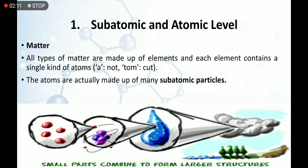Matter is made up of elements. Each element contains a single kind of atom. For example, if we look at water, water is made up of hydrogen and oxygen, both elements combined to form H2O. If we look at hydrogen, it is made up of the same kind of atoms.